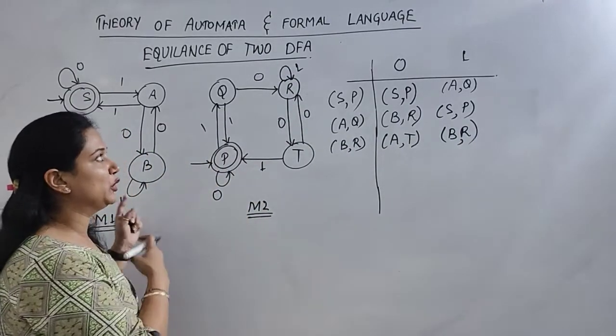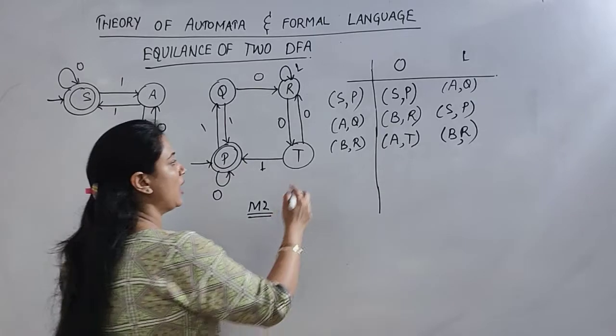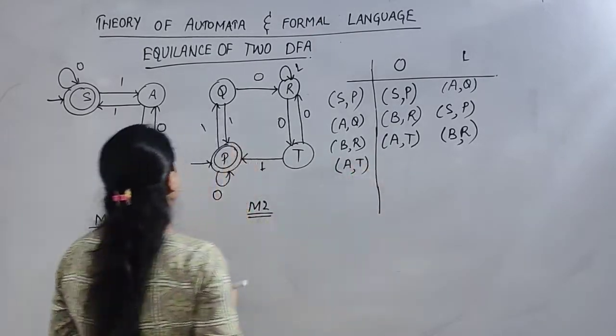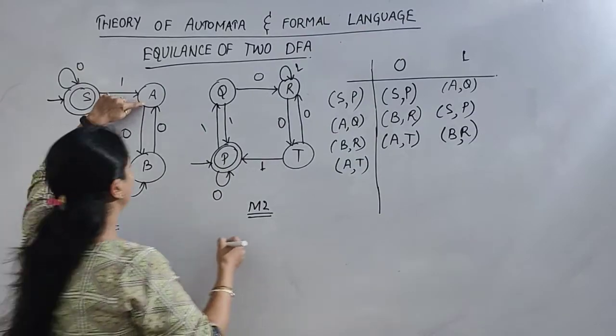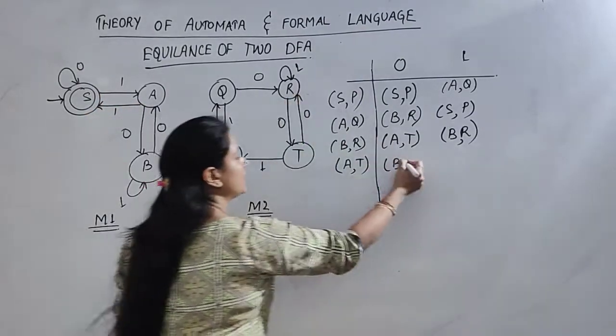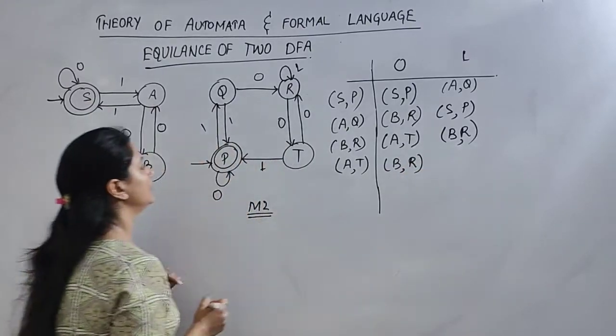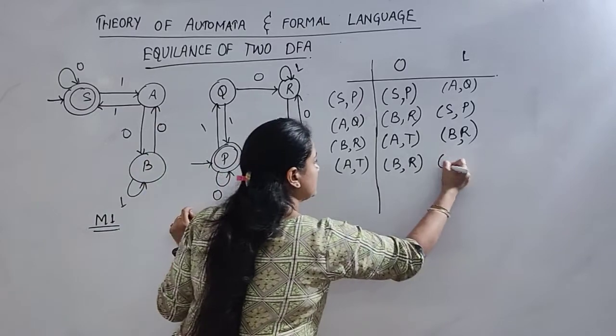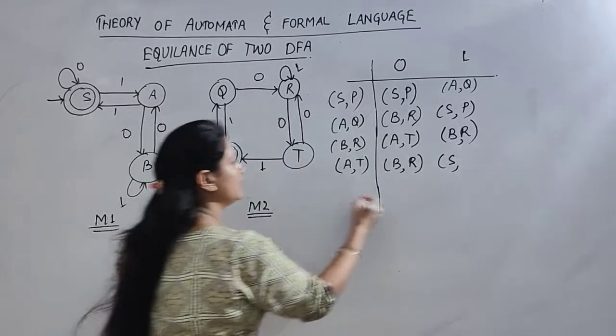Now we will check A, T. So A, T, A on zero input is B, and T on zero input is R. One input, A on one input is S, T on one input is T.